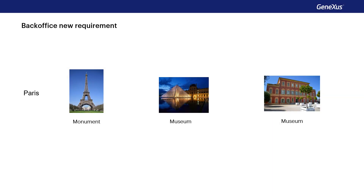Now we'll find it easy to implement the following requirement for the travel agency's back office. Suppose that at some point, the need arises to create a special category, tourist site, which groups together very popular tourist attractions in a city, regardless of whether they were previously categorized as monuments, museums, and so on.